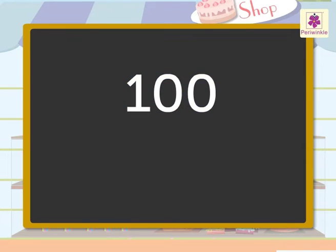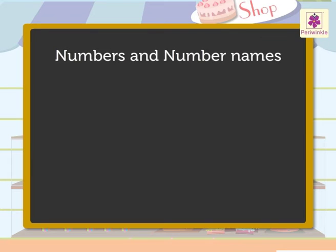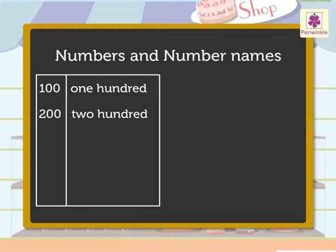The number 100 is the first and the smallest three-digit number. Now let us look at some more three-digit numbers and their number names: 100 — one hundred, 200 — two hundred, 300 — three hundred.